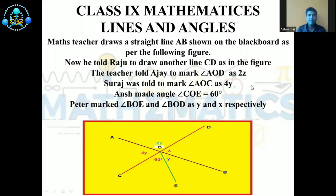Hello everyone. Today we will discuss a case study from Class 9 Mathematics, Chapter: Lines and Angles. A maths teacher drew a straight line AB on the blackboard. He then told Raju to draw another line CD. The teacher told Ajay to mark angle AOD as 2Z, Suresh to mark angle AOC as 4Y, Heinz made angle COE equal to 60 degrees, and Peter marked angle BOE and BOD as Y and X respectively.